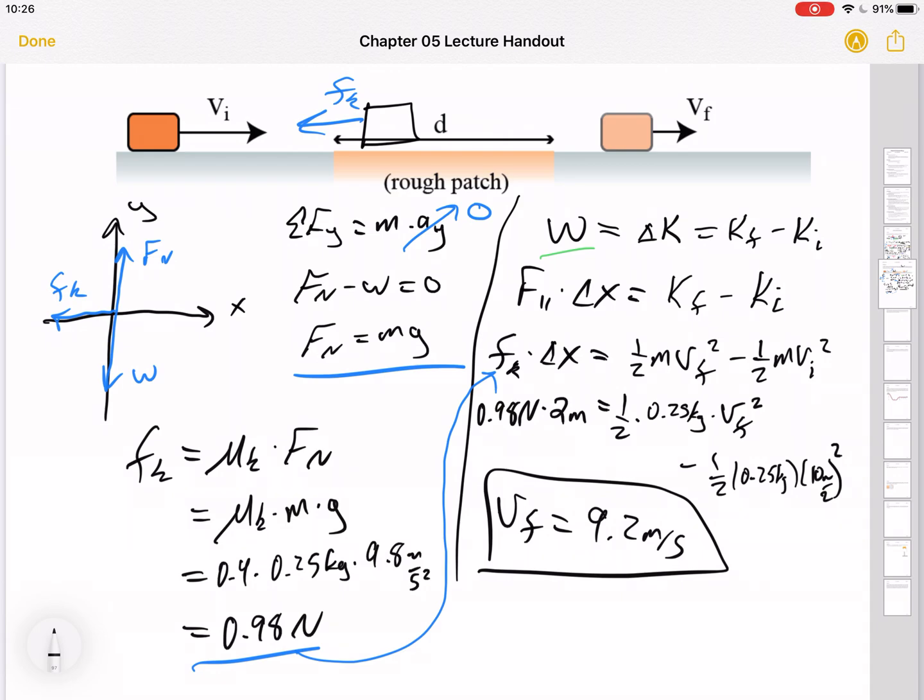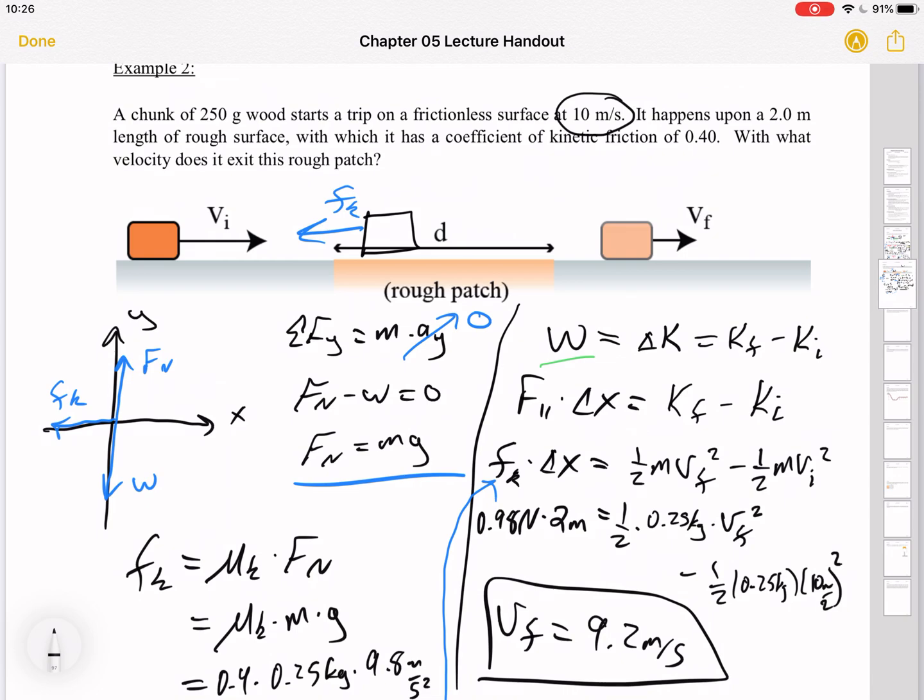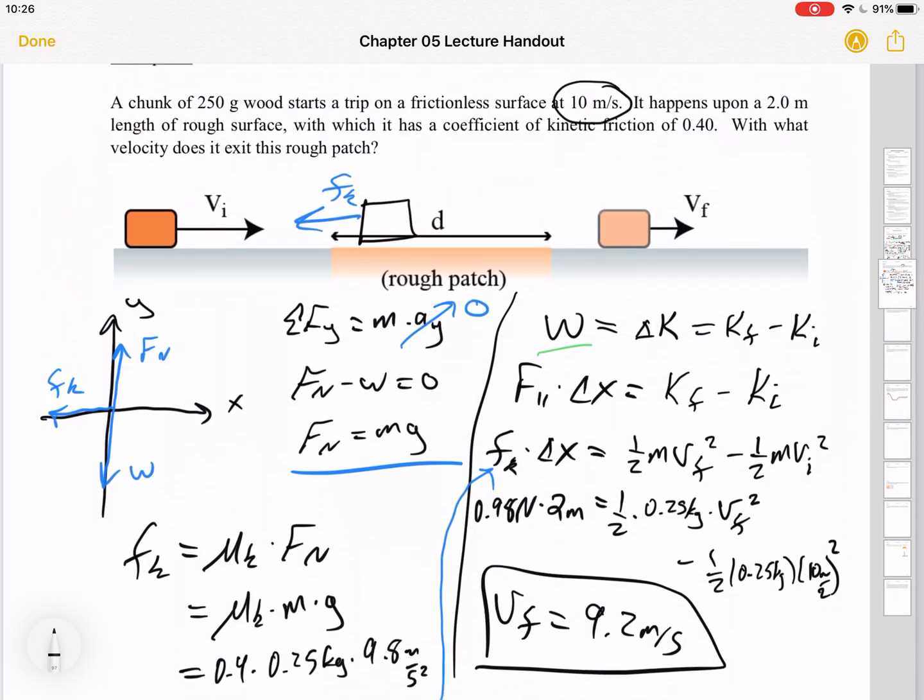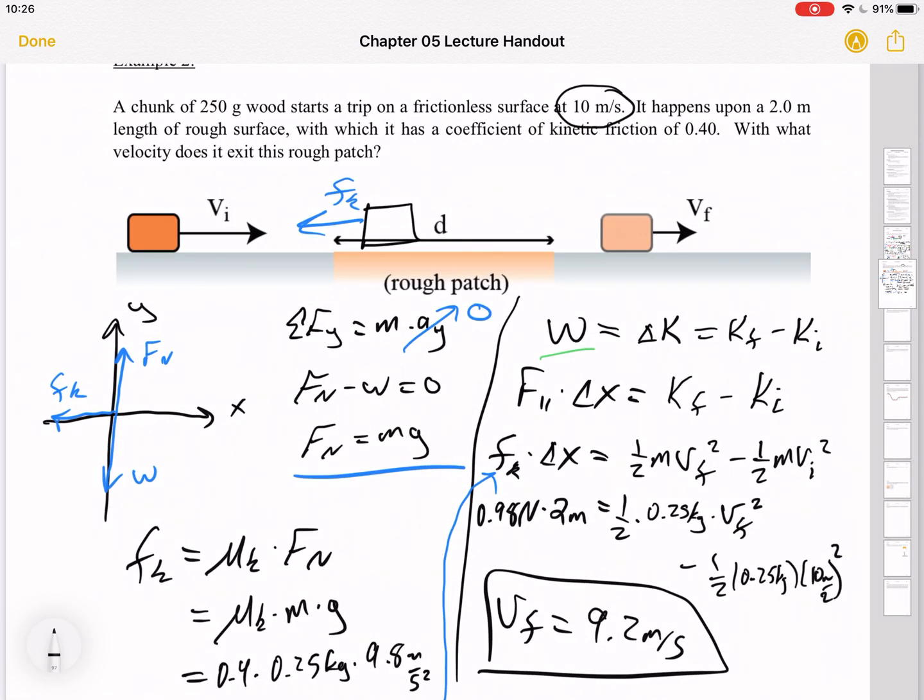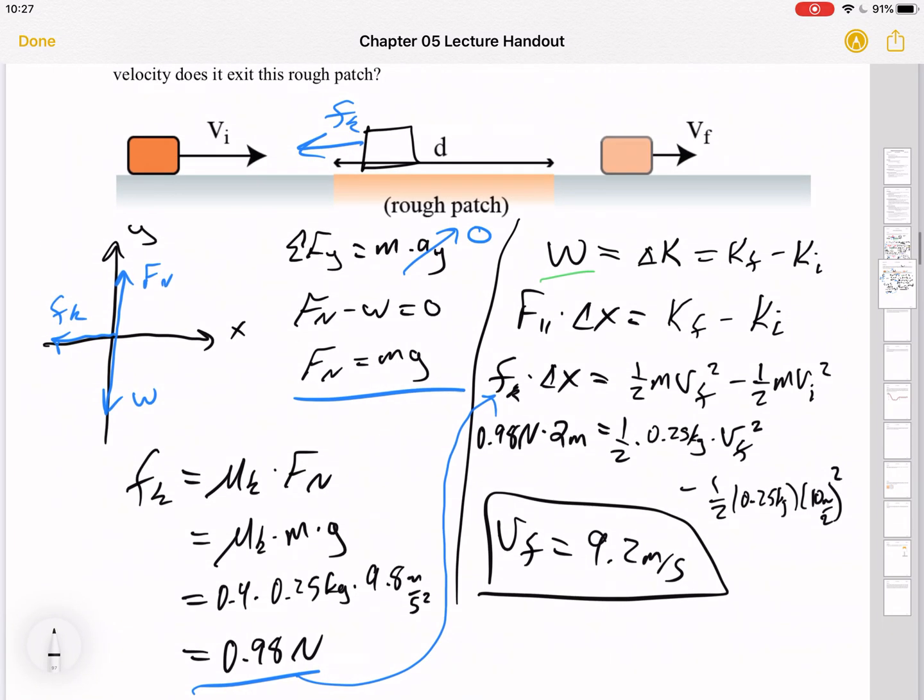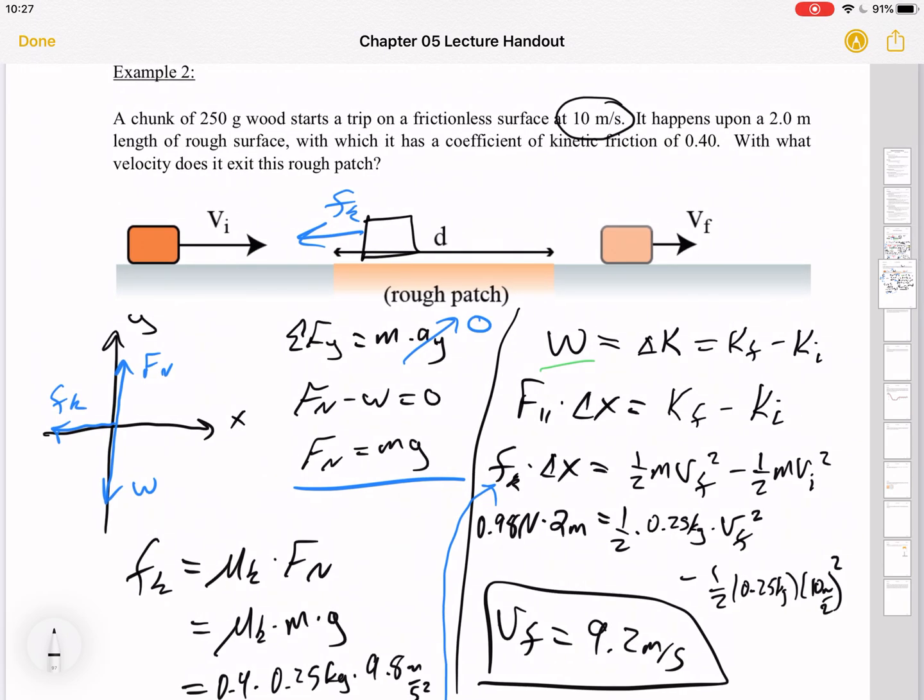One other thing I wanted to point out here was another way we can ask this question is, does the object make it through the rough patch? It's possible that friction would have stopped this object. Maybe instead of 2 meters, it's 200 meters. At some point, the box is going to stop. So we could have worked this problem again, and if we had gotten an imaginary number, if we'd gotten to a point where v final squared equals something negative, that would mean that getting through the entire patch actually costs more energy than the object started with. If your calculator breaks at that point, then you know that the block didn't make it all the way through. And what you'd probably solve for instead is how far does the object make it. In which case you would say v final is 0 and delta x would be what you'd solve for. And that sort of problem shows up in other places.